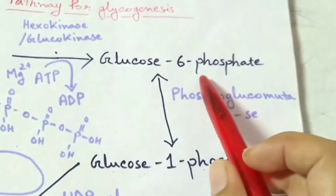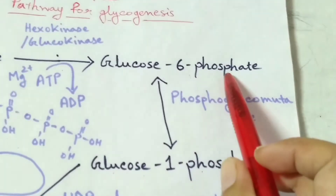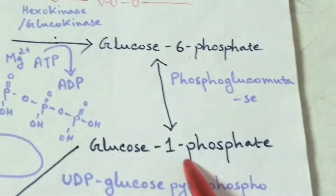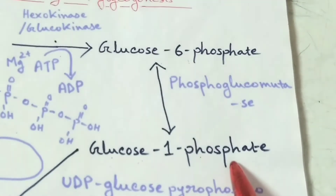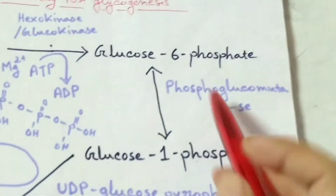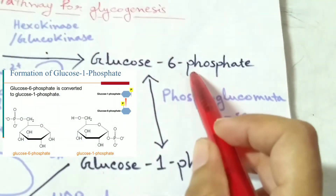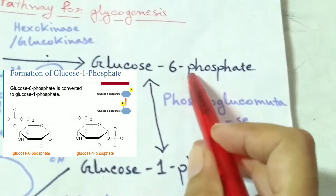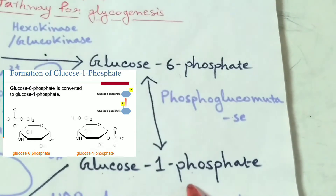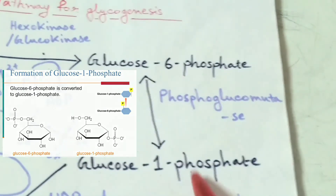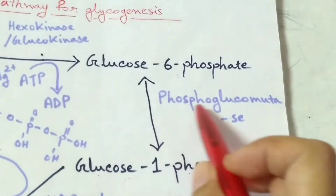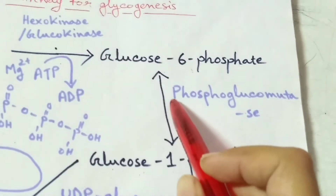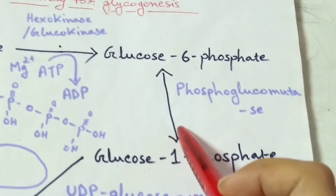In the next step, glucose-6-phosphate is converted into glucose-1-phosphate. The position of phosphate is converted from 6-phosphate to 1-phosphate by means of enzyme phosphoglucomutase. It is a reversible reaction.